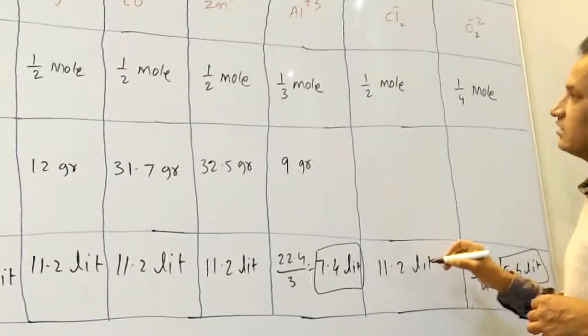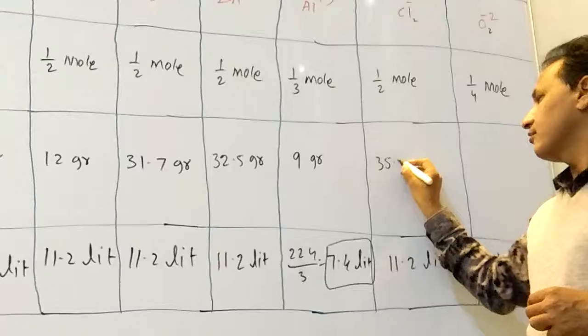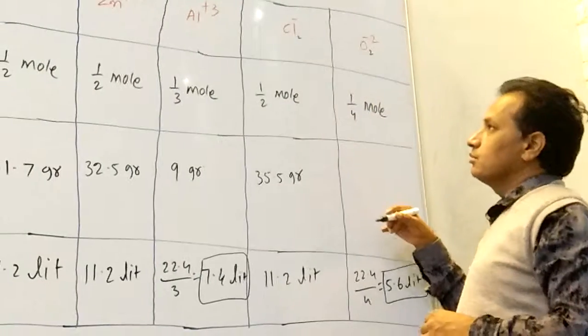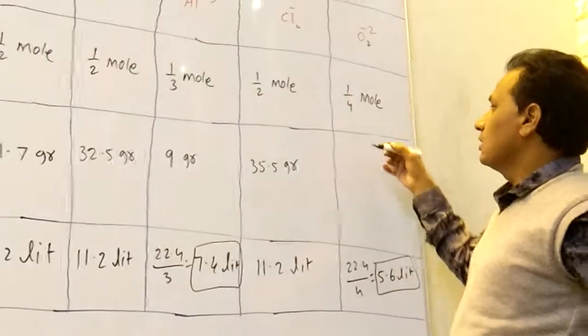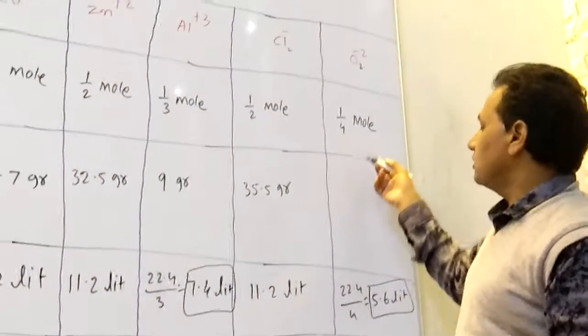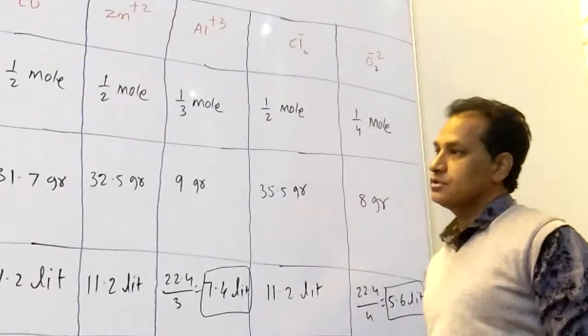And gram equivalent weight of chlorine is 35.5 grams, because gram equivalent weight of one by two. Next, gram equivalent weight of oxygen is 8 grams, that is 32 by 4, that is 8 grams.